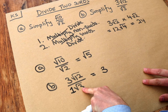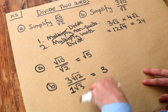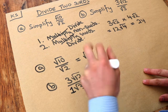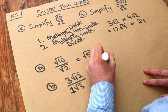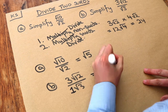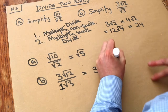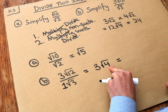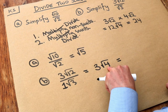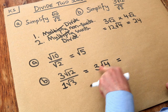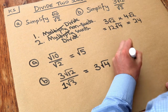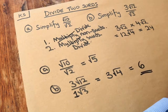Then we divide the surds: √12 divided by √3 is √(12÷3) = √4. We can simplify that because the square root of 4 is 2, since 4 is a square number. So 3 times 2 is 6, and that would be the final answer.